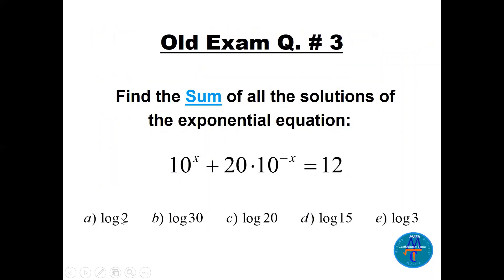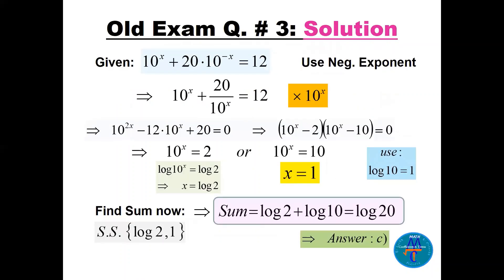Question number three asks for the sum of all solutions (multiple choice). The equation is 10^x plus 20 times 10^(−x) equals 12. We rewrite 10^(−x) as 1 over 10^x, giving 20 over 10^x. Multiplying the whole equation by 10^x yields 10^(2x) minus 12 times 10^x plus 20 equals 0, which we can factor directly.